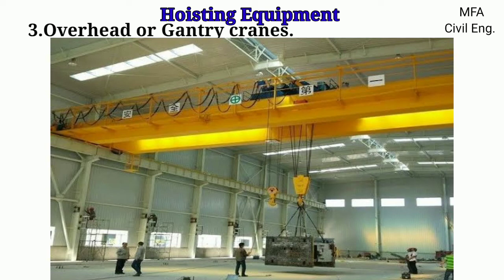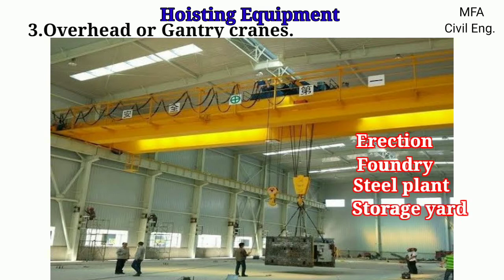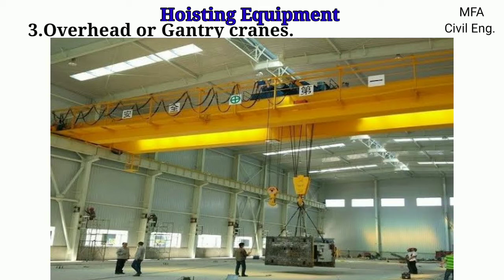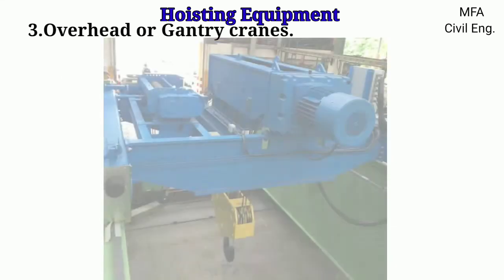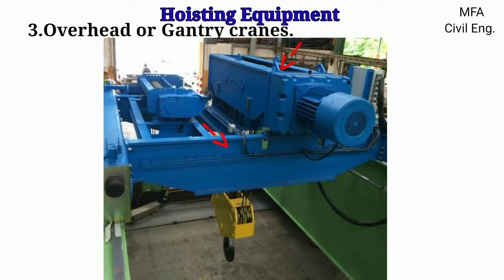Overhead or gantry type cranes, due to their large service area, freedom from floor obstructions, and three-way mobility, are widely used in erection, foundry, steel plants, storage yards, and different types of industrial work. This type of crane consists of two main parts: the bridge and the crab. The bridge consists of two main girders fixed at their ends to the end carriage, which are supported on tram wheels and capable of moving on the gantry rails. The crab consists of the hoisting gear mounted on the frame, which is mounted on another set of wheels and capable of traveling across the main girders.